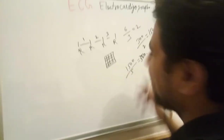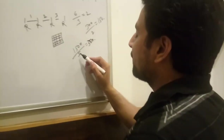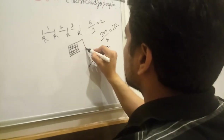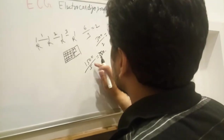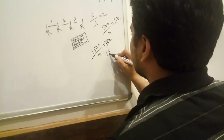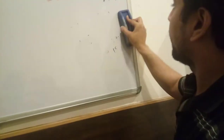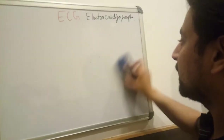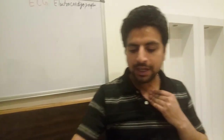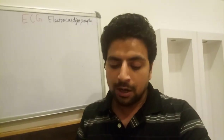If there are 2 large boxes (which equals 10 small boxes), then 1500 divided by 10 gives 150 — the same answer. I hope this is clear. Now I am going to explain some more important things about the ECG, specifically about the electrodes. There are a total of 12 leads.